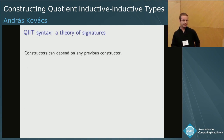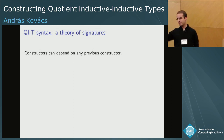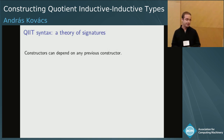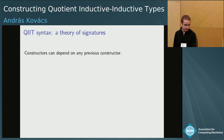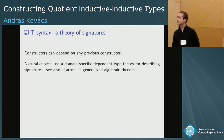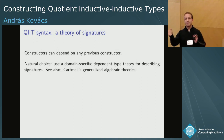Let's talk about the syntax. If we do this intrinsically typed QIIT definition of type theory, then everything can depend on everything — equations can depend on constructors, with no limitation on what can depend on what. The natural choice is to have a domain-specific dependent type theory for describing valid signatures. This is related to Cartmell's generalized algebraic theories, but there are significant differences between Cartmell's approach and ours.